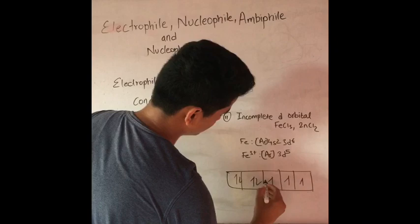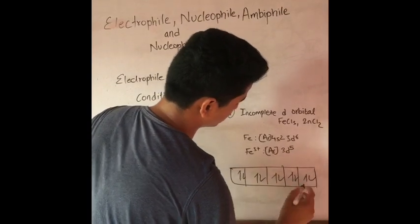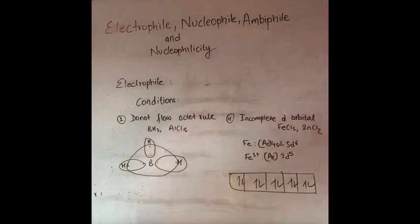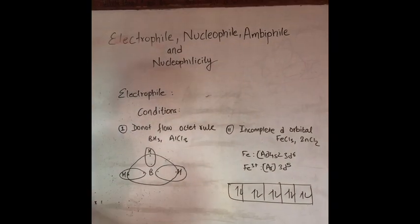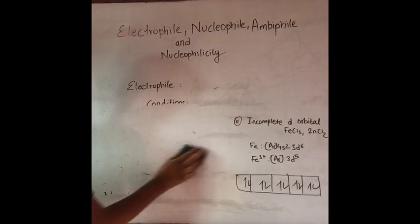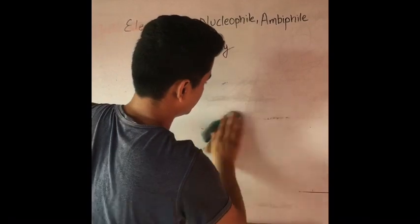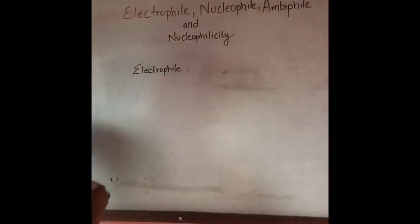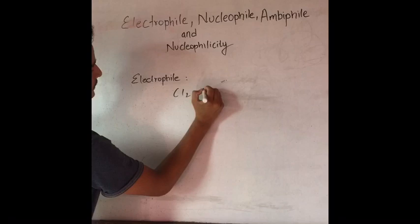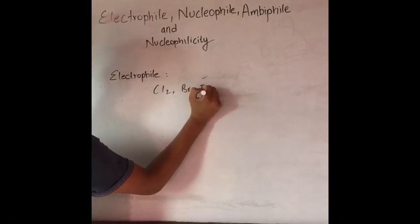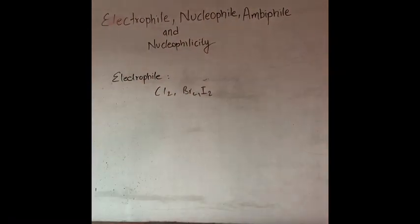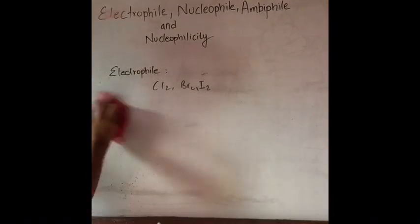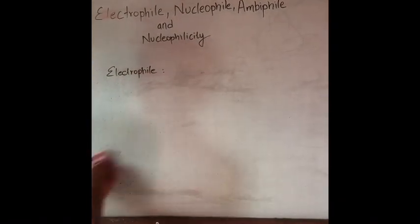This is the first type of electrophile. Not all electrophiles can be written this way. For example, Cl2, Br2, I2 — these halogens are also electrophiles.